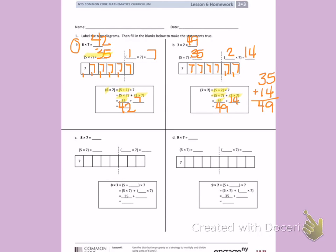C. 8 times 7. Again, I'm starting with 5 times 7. Here are all my 7s: 7, 14, 21, 28, 35. I'm adding 3 more 7s: 7, 14, 21. I broke the 8 apart into 5 and 3, so 5 times 7 plus 3 times 7. 35 plus 21. I'm going to write that problem on this side.